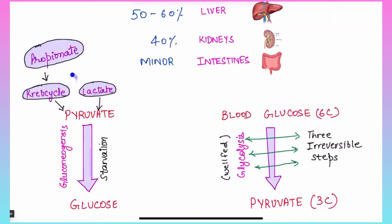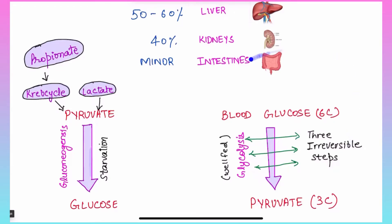Propionate enters the Krebs cycle, and lactate converts to pyruvate directly; then pyruvate converts to glucose in the starvation state — this is gluconeogenesis. Whereas in glycolysis, in the well-fed state, blood glucose as a 6-carbon molecule coming from the diet enters the cell and via 10 steps converts into two molecules of pyruvate. There are three irreversible steps in glycolysis, and these are the steps which differ in gluconeogenesis.